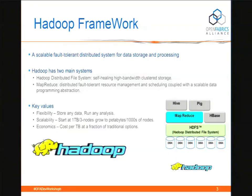Hadoop has basically two sets of components. One is the HDFS layer, which is purely a file system tying everything together. Then there's an analytics framework called MapReduce. And then you have HBase, Hive, and Pig — with a lot more add-ons. Pig is named that way because, essentially, the pig can eat anything. HBase is basically a database over MapReduce.